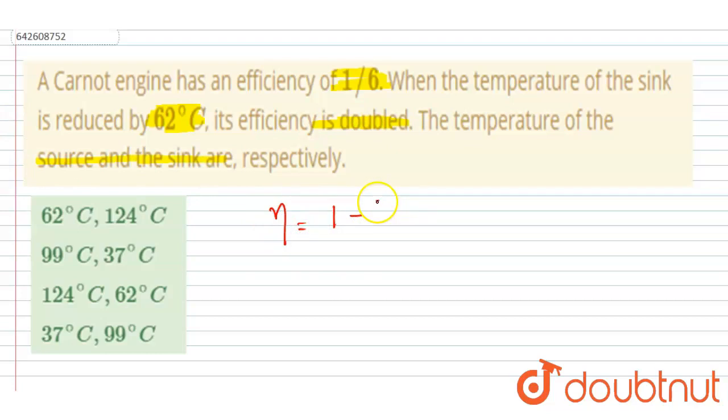equals to 1 minus T₁ by T₂, where T₁ is the temperature of the sink (sink temperature) and T₂ is the source temperature.